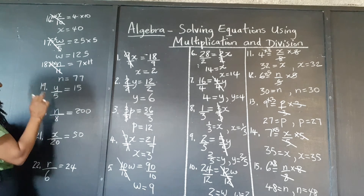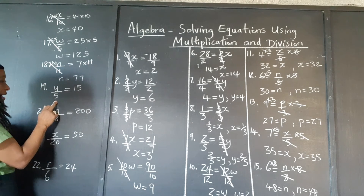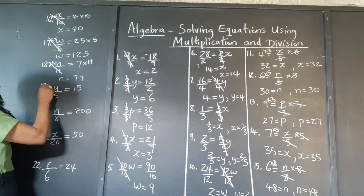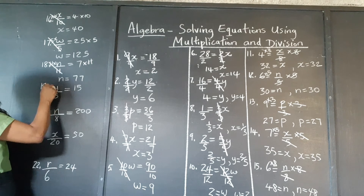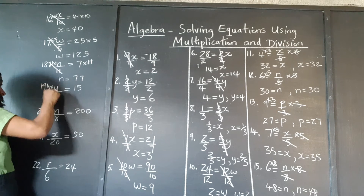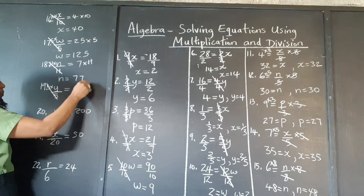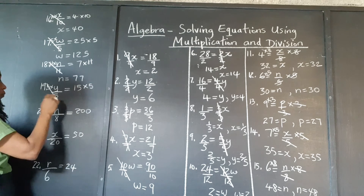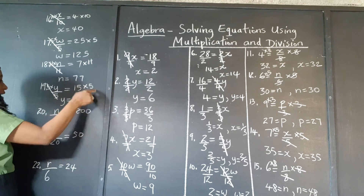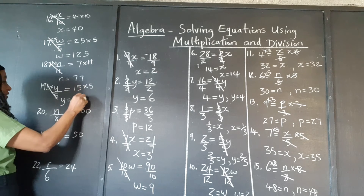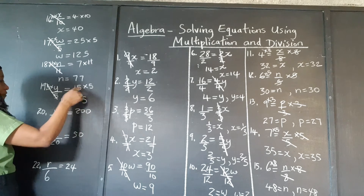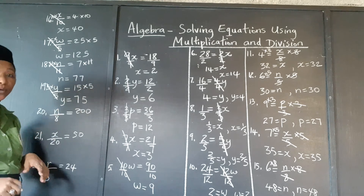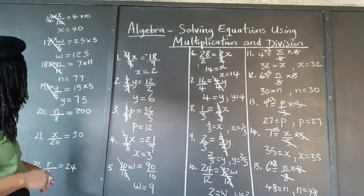Which number, when we divide it by 5, gives 15? We're multiplying by 5, so the 5s cancel out. We need to multiply this side by 5 as well. 15 times 5 is 75. So y is equal to 75.